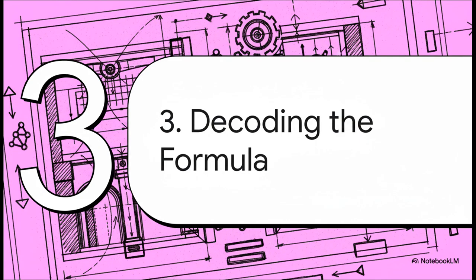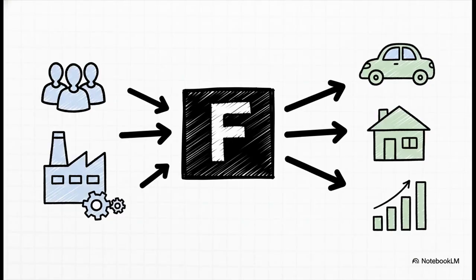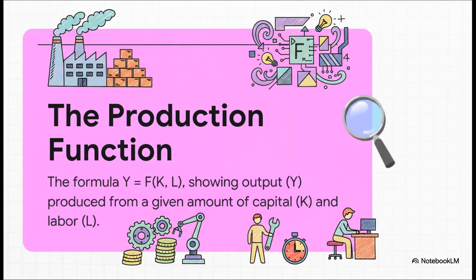Okay, our foundation is laid. The ground rules are set. Now it's time for the good part. Let's decode the actual formula at the heart of this whole blueprint. You can really think of the production function as like a recipe for the entire economy. It's the instructions that tell you exactly how to combine your ingredients, your capital and your labor, to cook up the final product, which is your country's total output. And here it is, the formula itself.